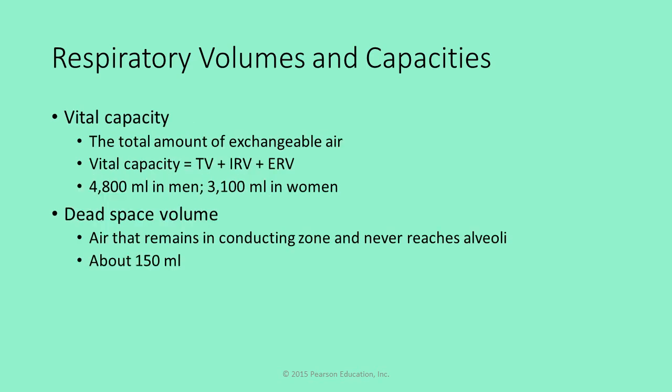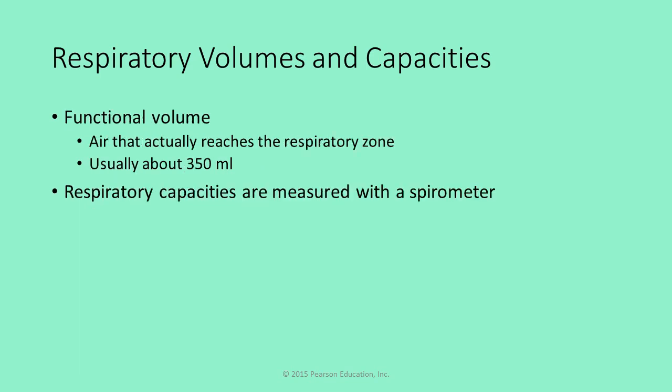You can determine vital capacity, which is the total of the inspiratory reserve volume and expiratory reserve volume added together. Dead space volume is the amount of air in the trachea, primary bronchi, and secondary bronchi that hasn't reached the alveoli. The functional volume is the amount of air actually reaching the respiratory zone — the area of the alveoli where gas exchange can occur.